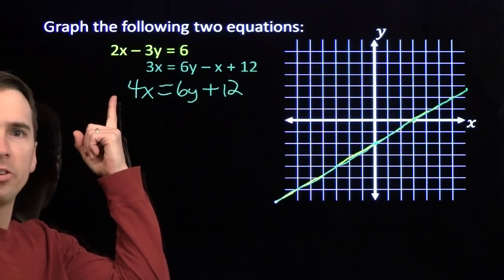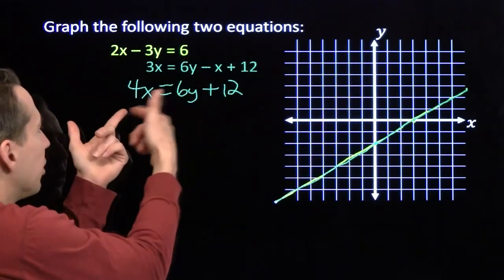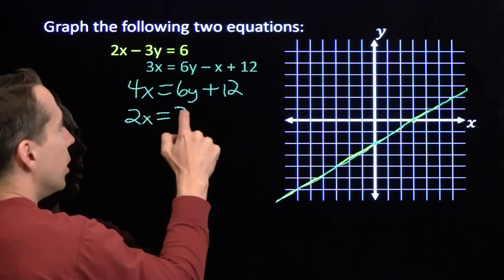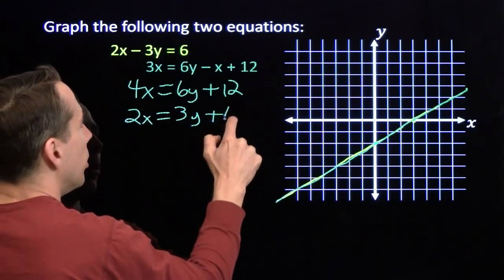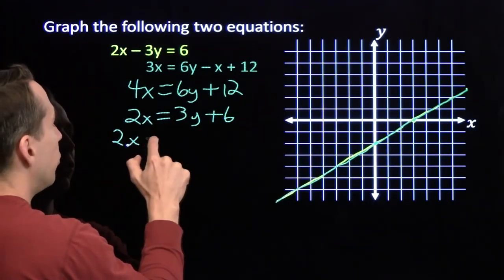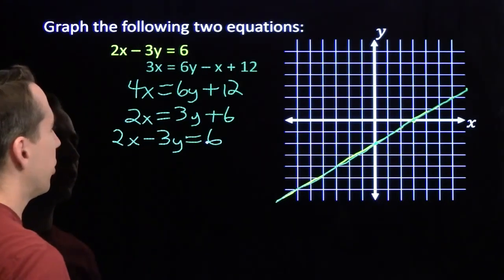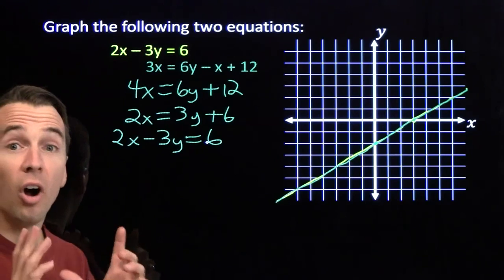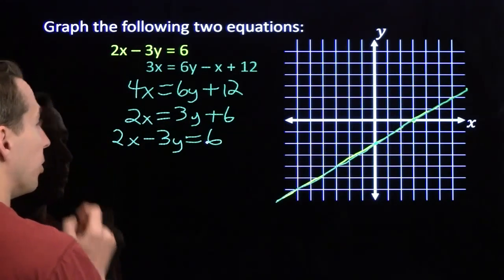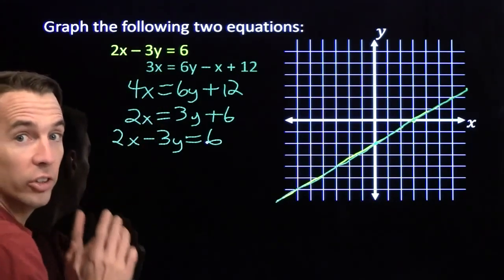These two equations must be the same — their graphs are identical. And we can see that just by dividing: we divide this equation, both sides, by 2. We get 2x equals 3y plus 6. Look familiar? Subtract 3y from both sides and we get 2x minus 3y equals 6. These two equations are identical, and that's why their graphs come out to be exactly the same. So this system of equations has infinitely many solutions — anything that works in one works in the other as well.